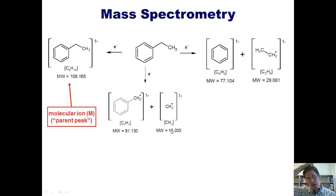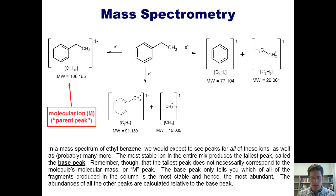I hasten to point out to you students that a methyl radical is not as unstable as a methyl carbocation. Thus, in a mass spectrum of ethyl benzene, we would expect to see peaks for all of these ions, as well as probably many more. The most stable of this entire mixture, which once again I'm expecting would be this benzyl radical fragment, would give the tallest peak, which is called the base peak.